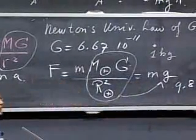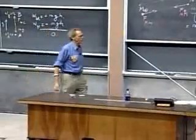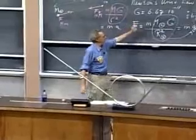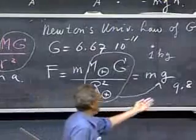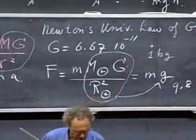If you substitute in there the mass of the Earth, which is six times ten to the twenty-four kilograms, you put in here the gravitational constant, and you put in the radius of the Earth, which is 6,400 kilometers, out pops our well-known number of 9.8 meters per second squared.